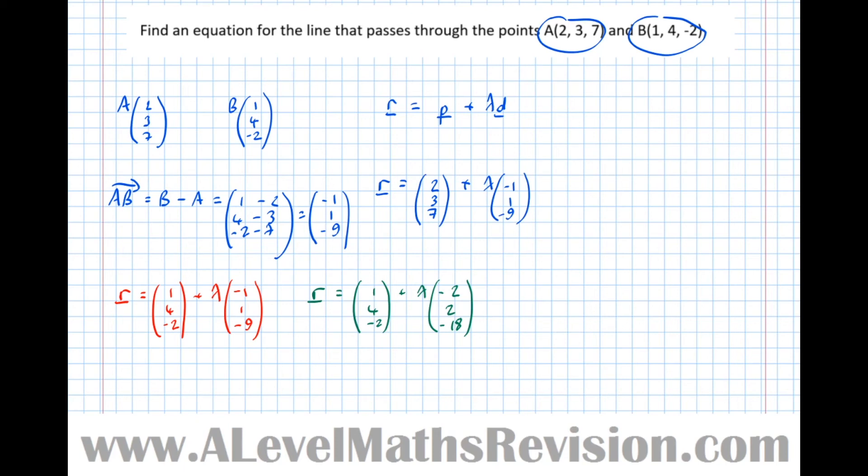So equally, a ridiculous answer, but still correct, would be R equals (2,3,7), that point there, plus lambda (-2000,2000,-18000). Because again, it's parallel to that direction there. It would be a ridiculous answer to write, and I wouldn't recommend it. However, it is still equivalent. It is still a correct answer.